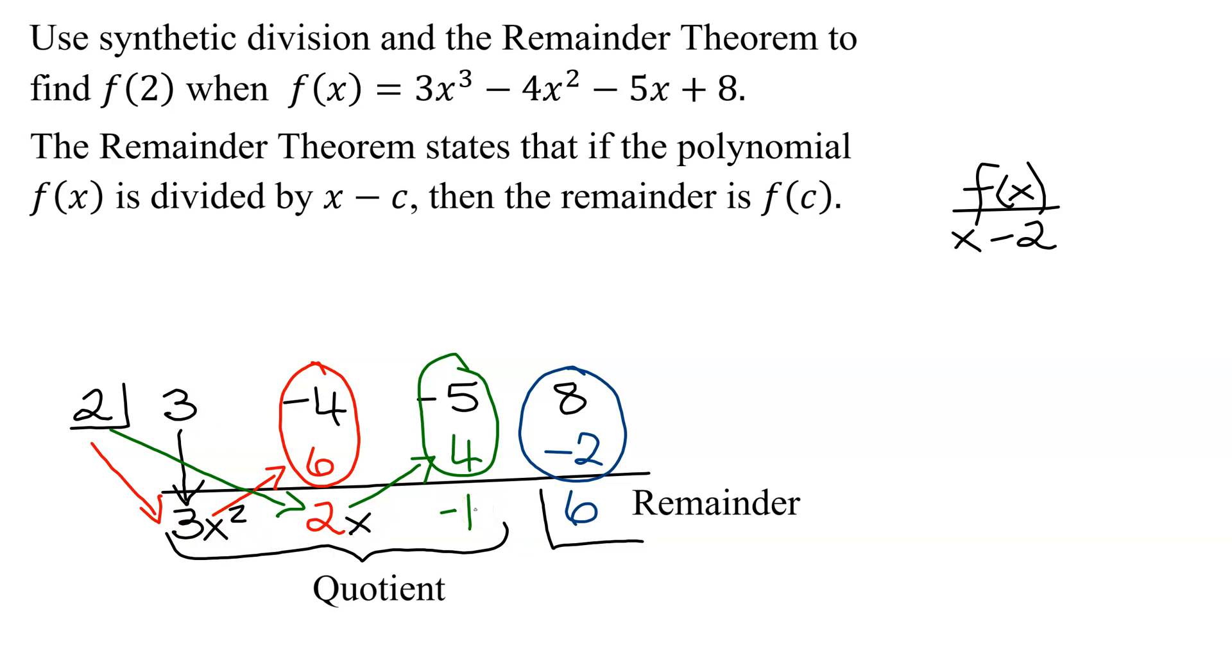But in this case, we don't need the quotient. All we need is the remainder. So f(2) is equal to our remainder over here of 6.